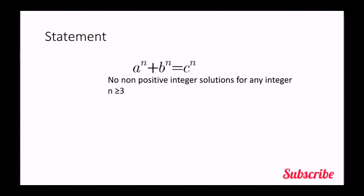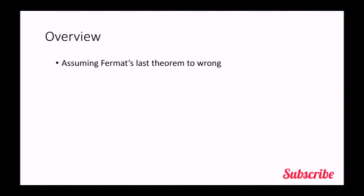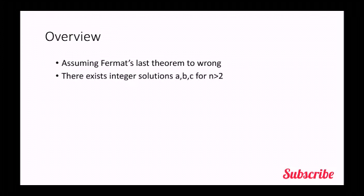Sir Andrew Wiles had proven this by the method of contradiction. Now let's come to the overview of the proof. As we are using the method of contradiction, we must first assume that the FLT is false. It means that there exist non-zero integer solutions for a, b, c for n greater than 2.